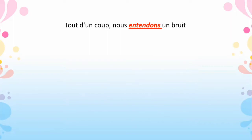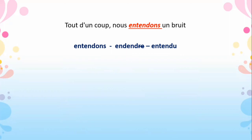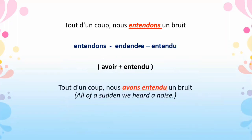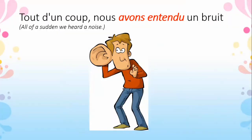'Tout d'un coup nous entendons un bruit' — all of a sudden we hear a noise. 'Entendons' comes from 'entendre', a regular -re ending verb, so cut the -re and add u for the past participle: 'entendu'. Avoir plus past participle gives: tout d'un coup nous avons entendu un bruit — all of a sudden we heard a noise.